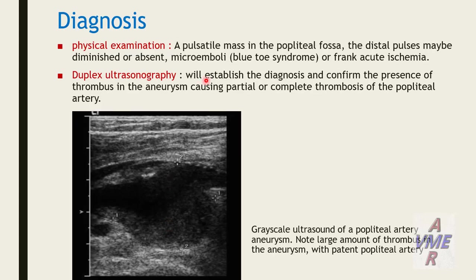Diagnosis by physical examination: pulsatile mass in the popliteal fossa, distal pulse may be diminished or absent, blue-toe syndrome or frank acute ischemia. Duplex ultrasound will establish the diagnosis and confirm the presence of thrombus in the aneurysm, causing partial or complete thrombosis of the popliteal artery, as shown in this picture.